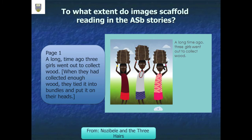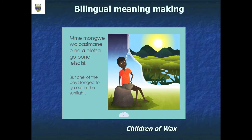Looking at bilingual meaning-making, a book called The Children of Wax illustrates that you can have two languages in these texts — in fact, two, three, or four languages. Some of the stories on the African Storybook have 20-plus different versions of the same story in many different languages.